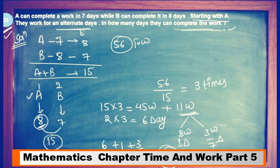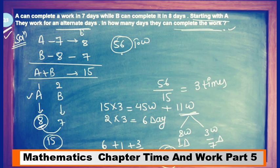You will understand that A and B together have 15 units of work combined. A is working on the first day with efficiency 8, B is working on the second day with efficiency 7. Adding both gives 15. The total work is 56. We divide 56 by 15, getting 3 complete cycles, so 15 × 3 = 45 work is done.